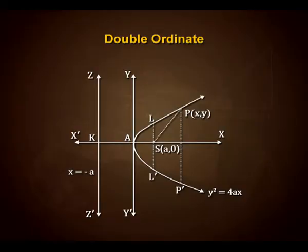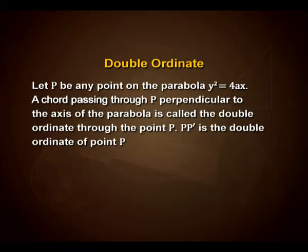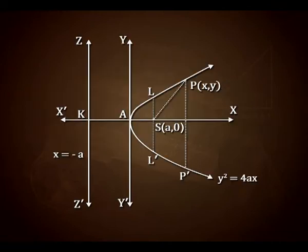What is a double ordinate? Let P be any point on the parabola y² = 4ax. A chord passing through P perpendicular to the axis of the parabola is called the double ordinate through the point P. PP' is the double ordinate of point P, as we can see in the figure on your monitor.